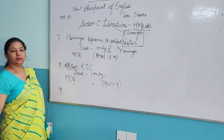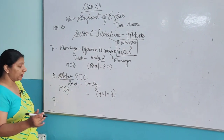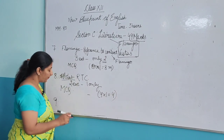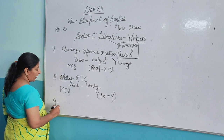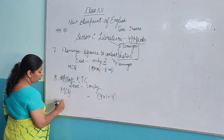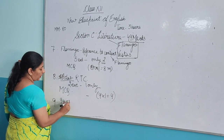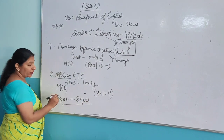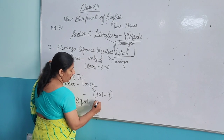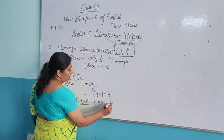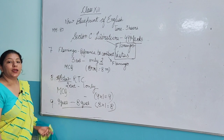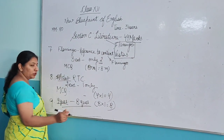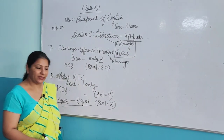The ninth question will be very easy and represents a new format never used before in 12th class English. Nine questions will be given and you have to do any eight. These eight questions are of 1 mark each — 8 into 1 equals 8 marks. Questions come from both books: Flamingo as well as Vistas.